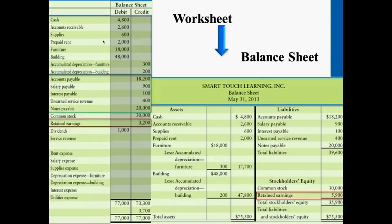What about the building? The original cost or purchase price is forty-eight thousand dollars, and we've accumulated two hundred dollars in depreciation. So the current value is no longer forty-eight thousand dollars — the book value of the building is forty-seven thousand eight hundred dollars. The middle column on the left-hand side is there just to provide a subtotal for these assets.